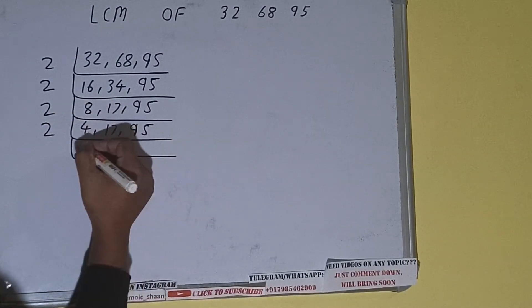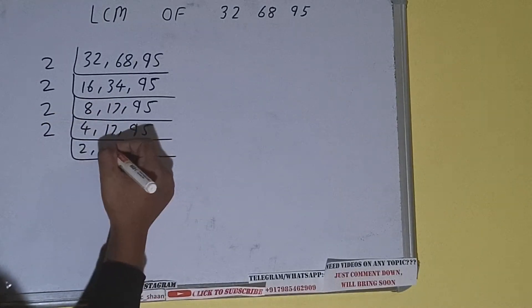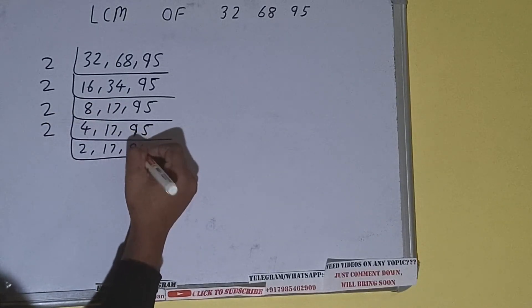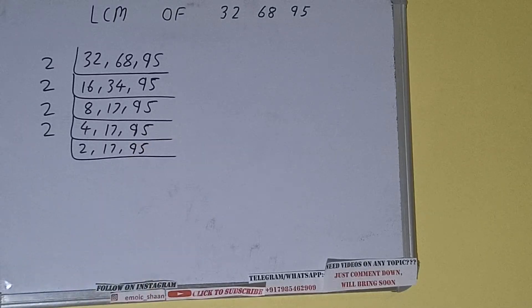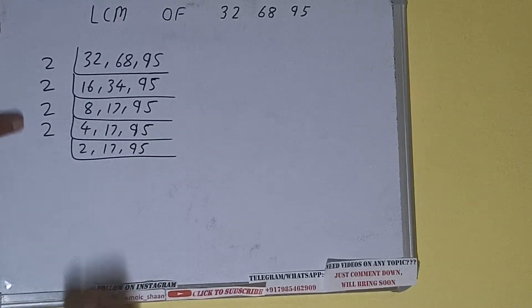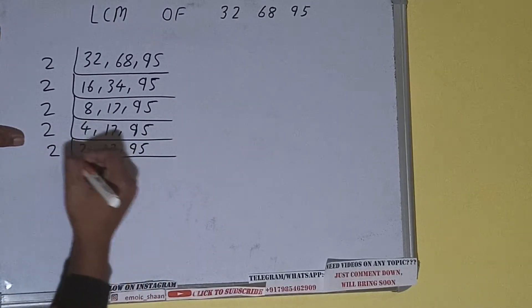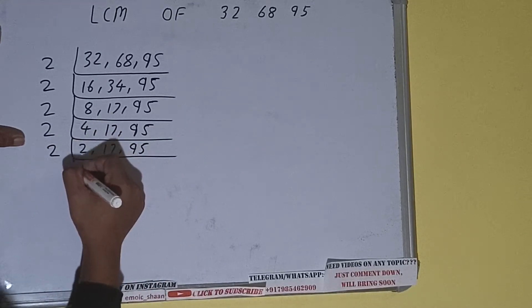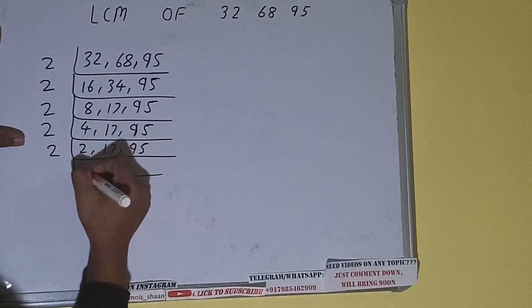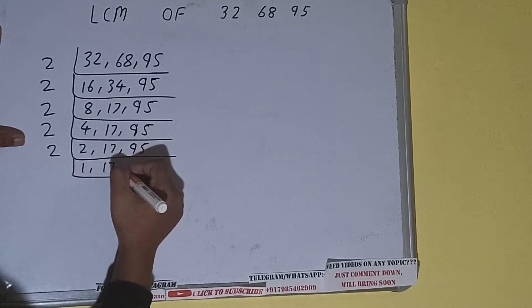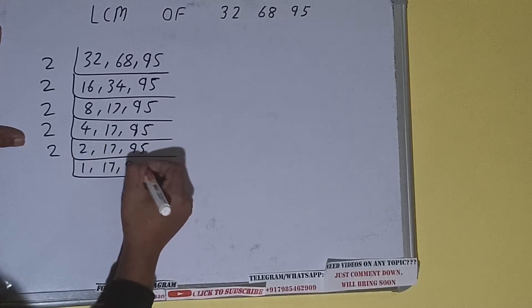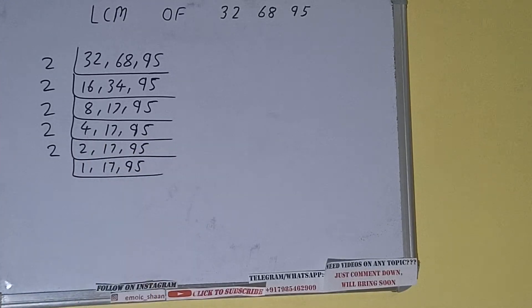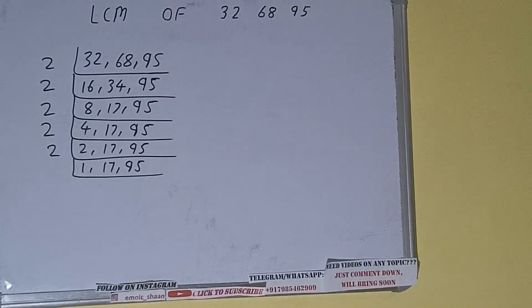After dividing, the first number will become 2, and the second and third numbers will remain the same. Again, the first number is divisible by 2, so let's divide, and the second and third numbers will remain the same. Now none of the numbers are divisible by 2, so we'll check with the next lowest prime number.